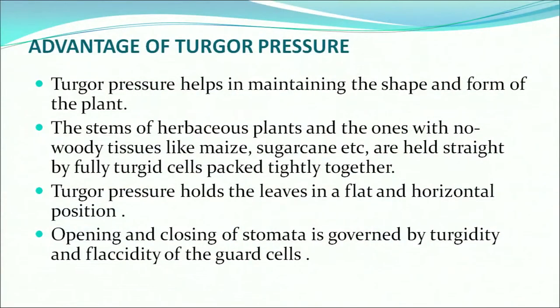What is the advantage of turgor pressure? Turgor pressure helps in maintaining the shape and form of the plant. The stems of herbaceous plants with no woody tissues — like maize and sugarcane — are held straight by fully turgid cells packed tightly together. Turgor pressure also holds leaves in a flat and horizontal position. In addition, the opening and closing of stomata is governed by the turgidity and flaccidity of the guard cells.